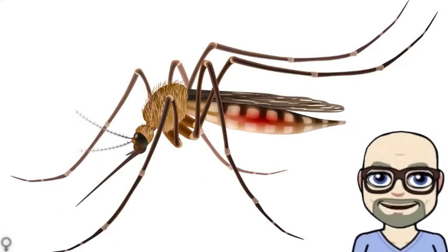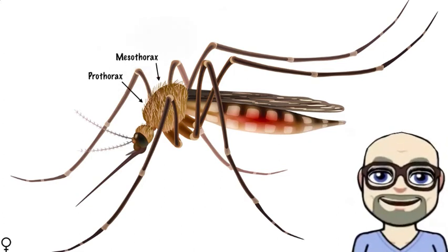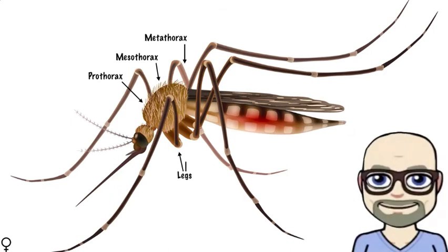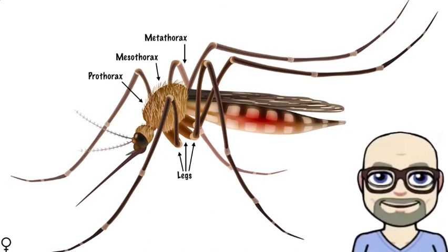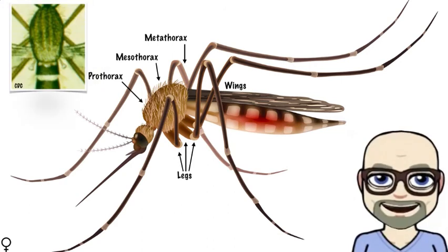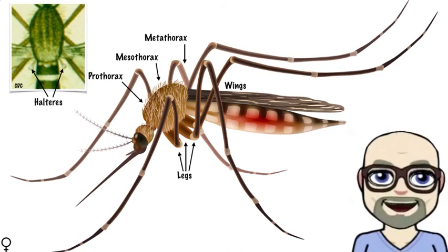Divided into three subregions, the thorax consists of the prothorax toward the head, the mesothorax in the middle, and the metathorax toward the abdomen. Attached to each subregion is a pair of legs. The mesothorax contains spiracles that allow gas exchange between the body and the environment. Trachea tubes deliver oxygen to the tissues. The mesothorax contains a pair of wings. The metathorax contains halters in the form of a knob or club, which vibrate up and down with the wings and act as gyroscopes or flight stabilizers.